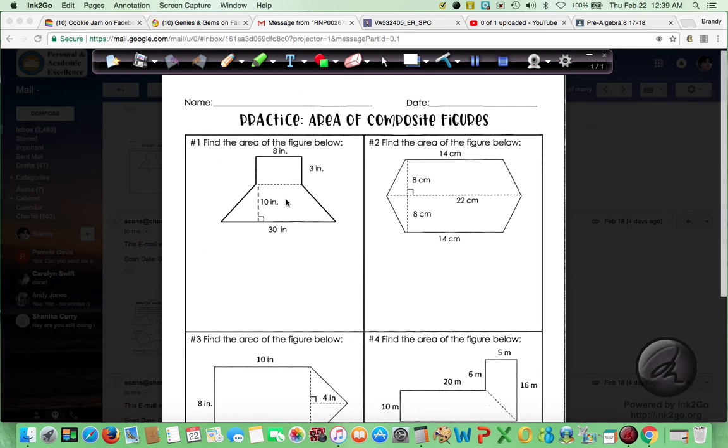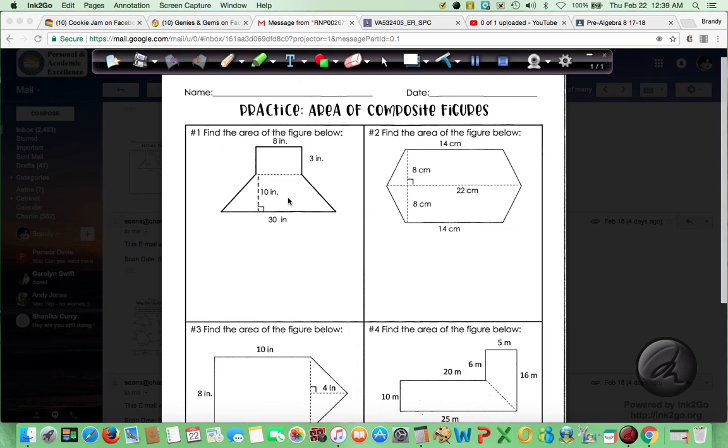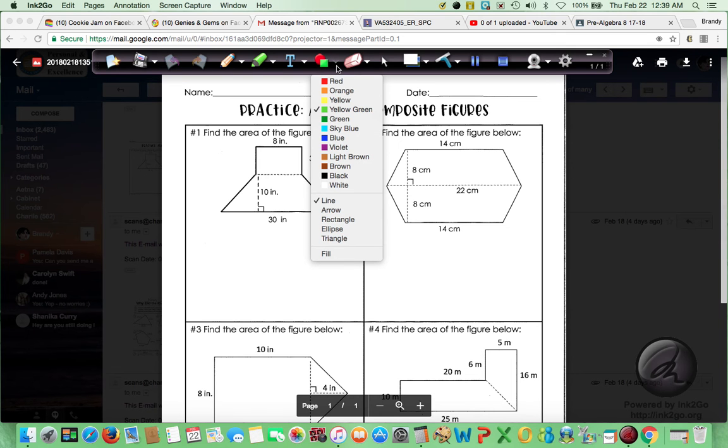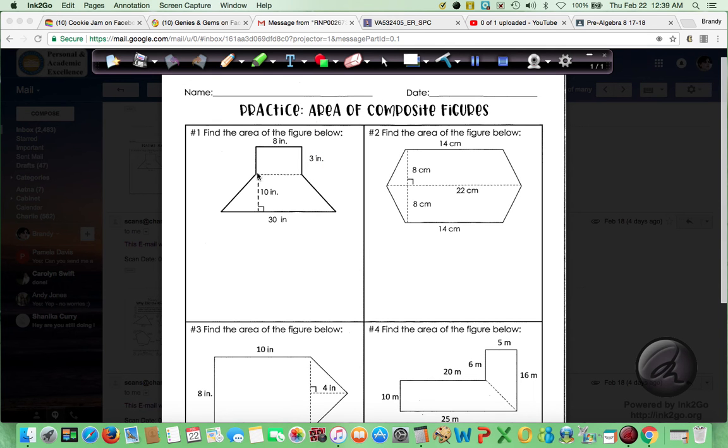So let's take number one. I will do number one for you and give you some hints on two, three, and four. So number one, I think with this dotted line it's pretty easy to see we have a rectangle and a trapezoid. So I'm going to use sky blue and I'm going to draw a line right here. And now we can easily see the rectangle and the triangle.